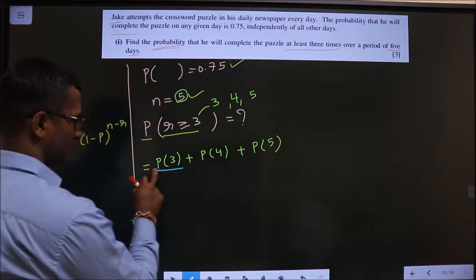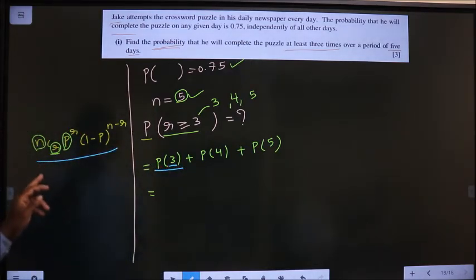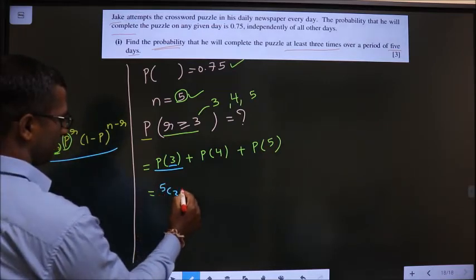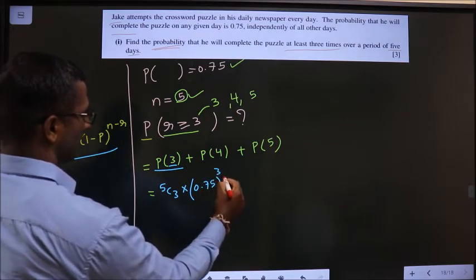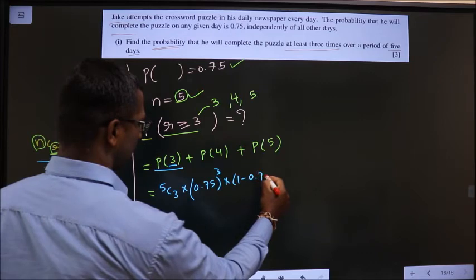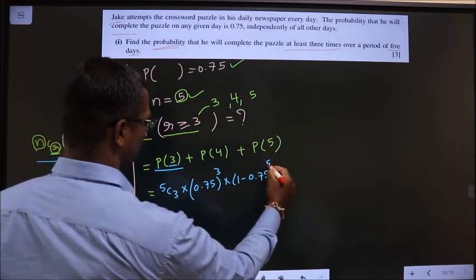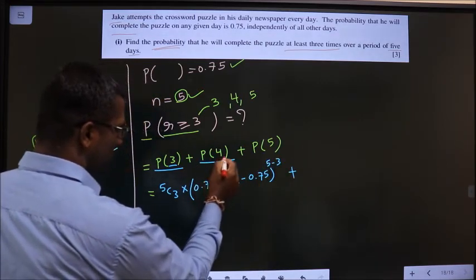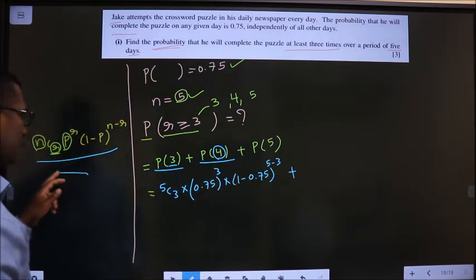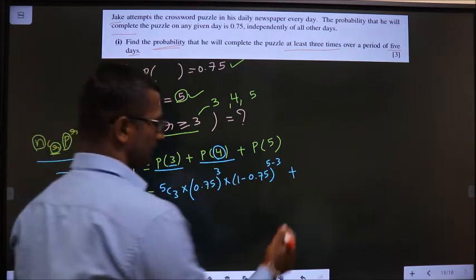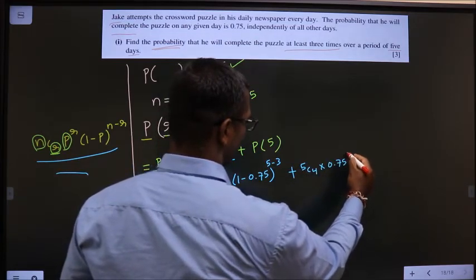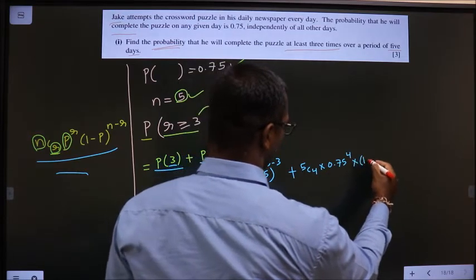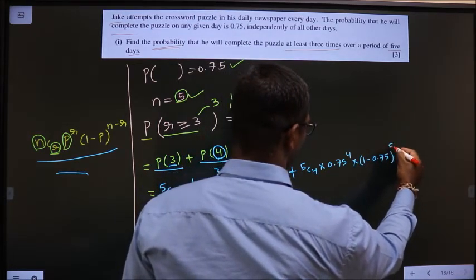So now replace r equal to 3 in this formula. n is 5, so 5C3 × 0.75³ × (1-0.75)^(5-3). Now replace r equal to 4 in this formula: 5C4 × 0.75⁴ × (1-0.75)^(5-4).